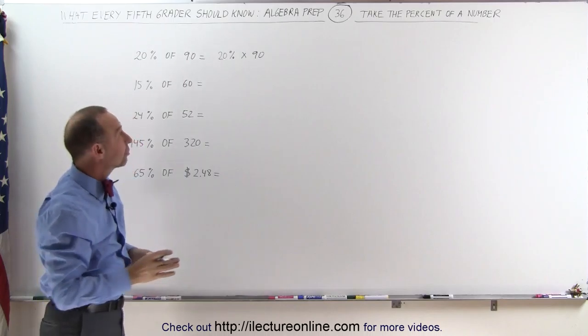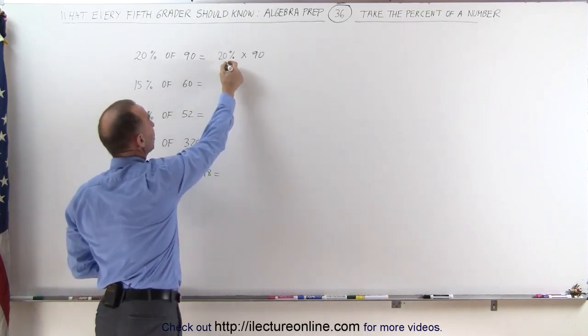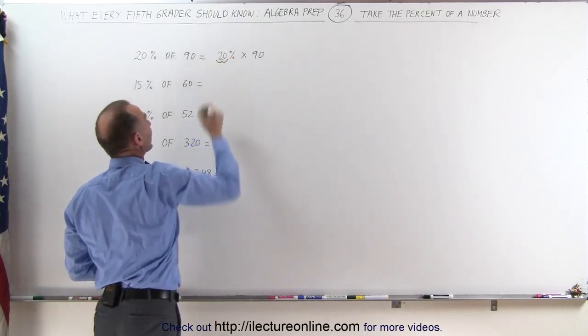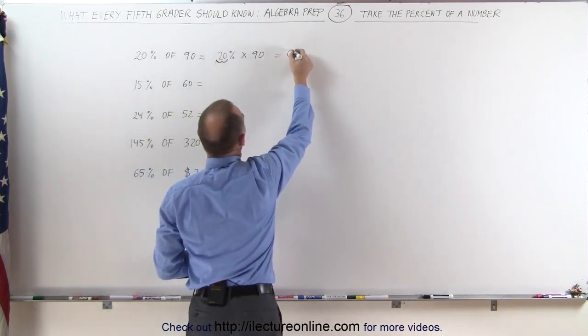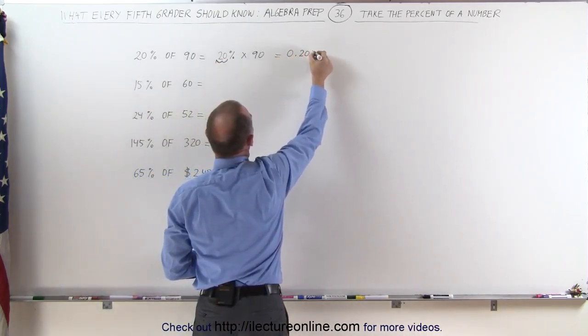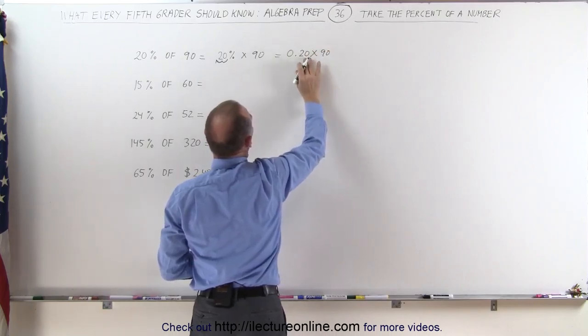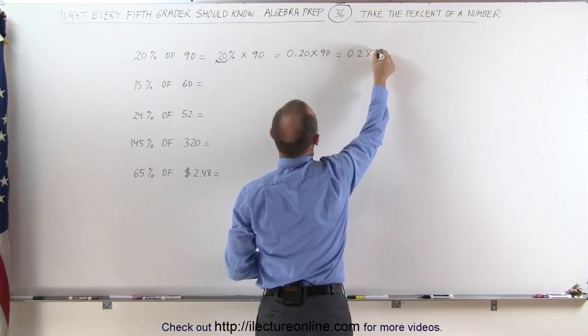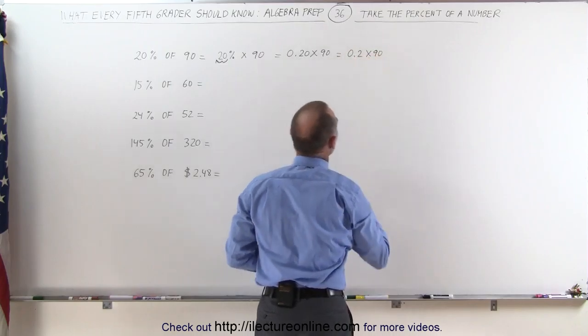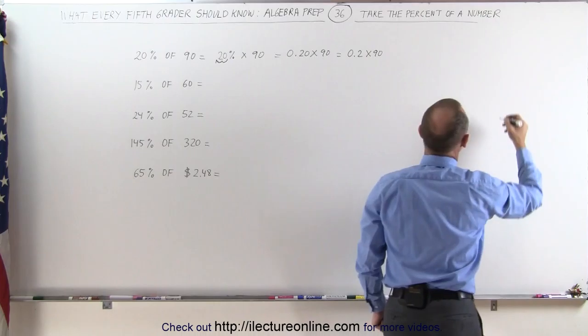The next thing you need to do is convert the percent to a decimal. We do that by moving the decimal place over two spots. This can therefore be written as 0.20 times 90. And of course, we don't need the zero there. This is the same as 0.2 times 90.